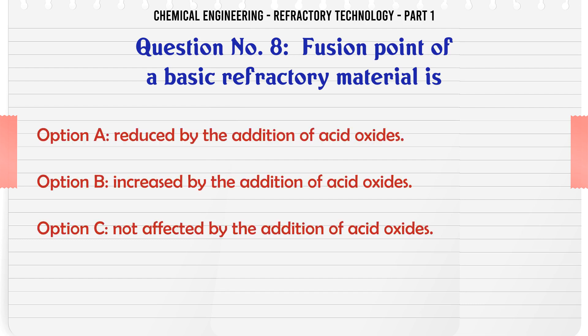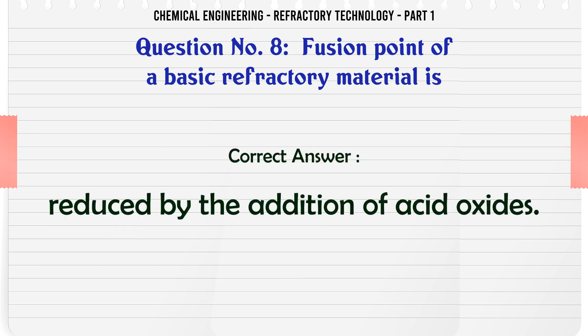Fusion point of a basic refractory material is: A. Reduced by the addition of acid oxides, B. Increased by the addition of acid oxides, C. Not affected by the addition of acid oxides, D. Always less than 1000°C. The correct answer is Reduced by the addition of acid oxides.